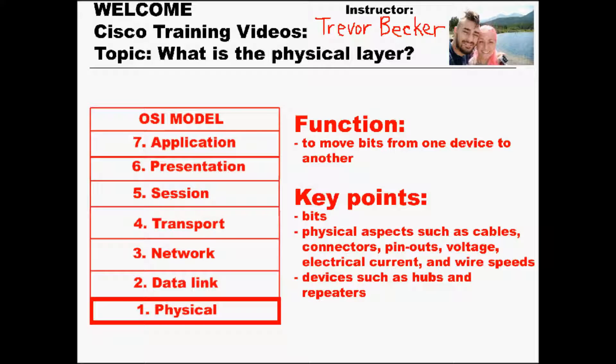The physical layer is layer 1 on the OSI and the TCP/IP updated models. This layer is where the actual connections between devices occur. At this layer the connection data is referred to as bits — everything is a bunch of ones and zeros at this point. The sole responsibility of layer 1 is to move these bits from one device to another.